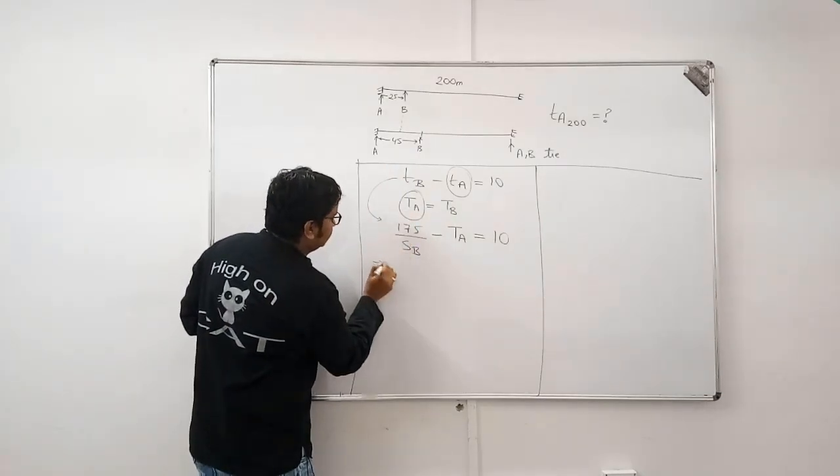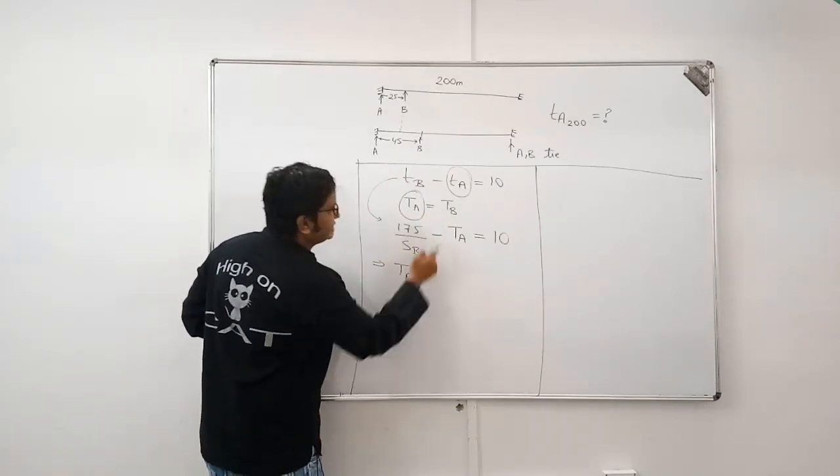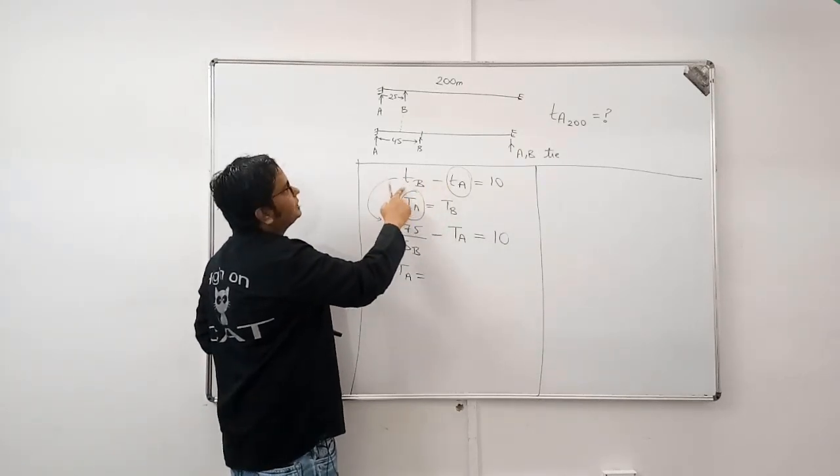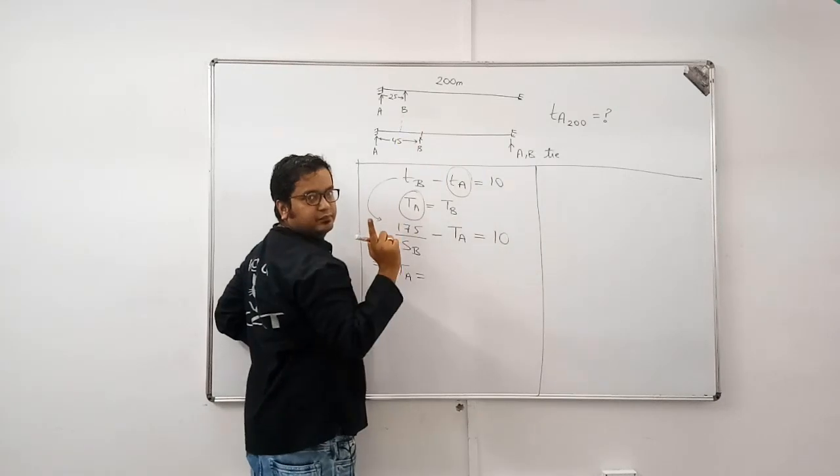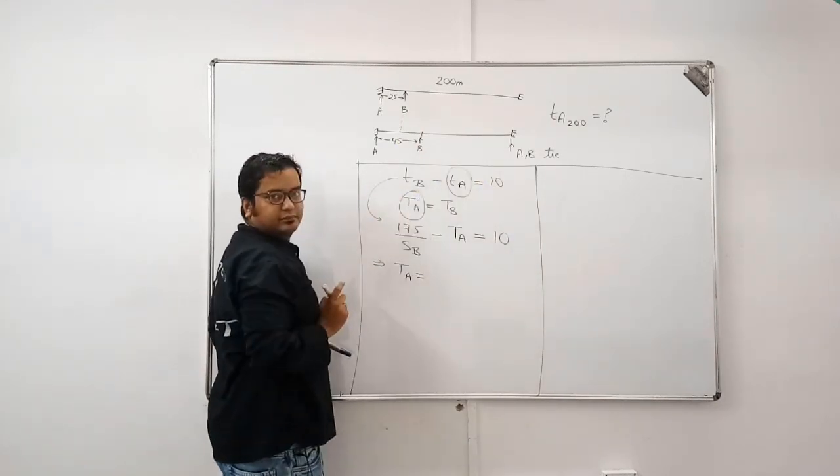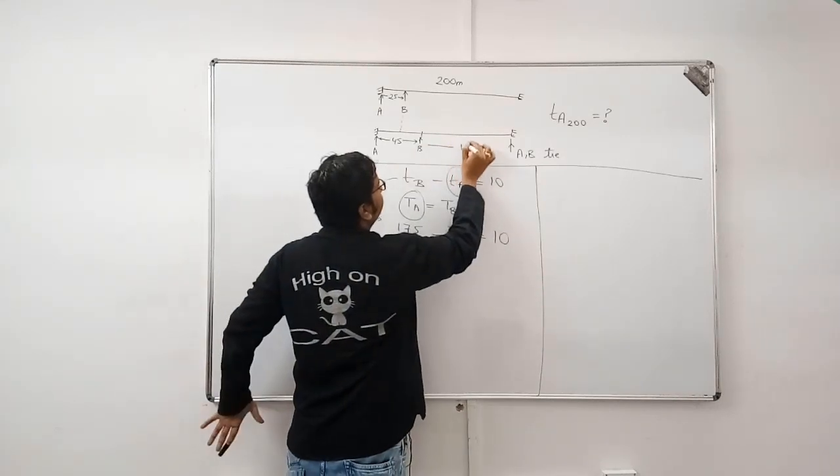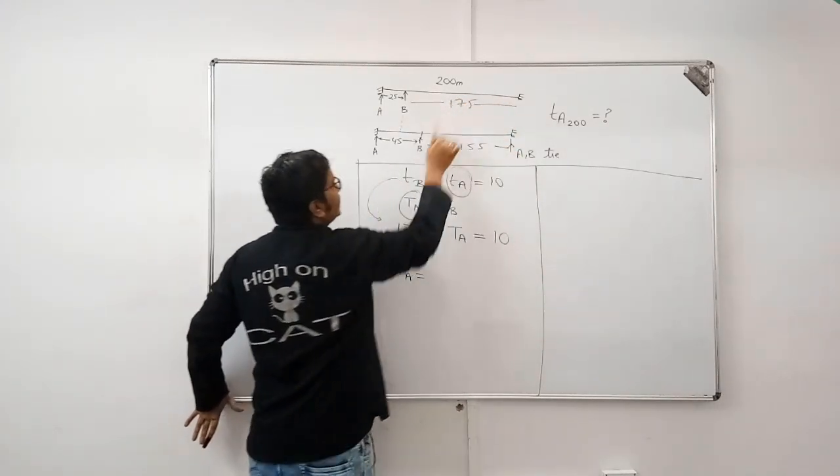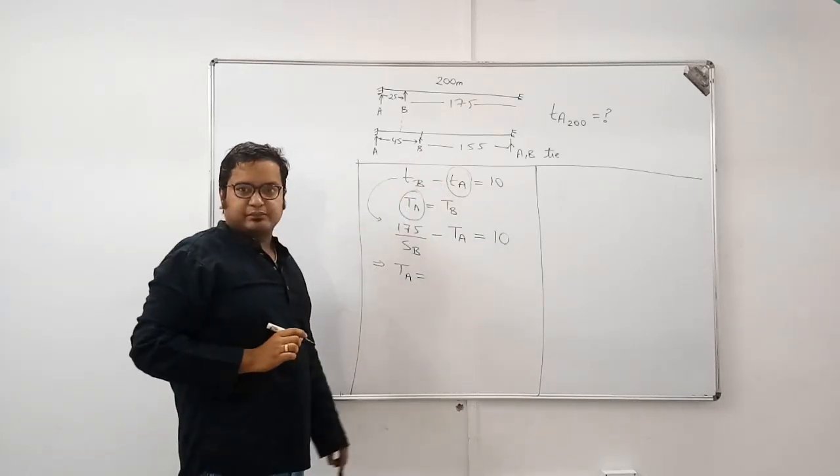From here, time taken by A is equal to, now this TB is different from this TB. This is time taken by B to cover 175 meters. And this one is time taken by B to cover 155 meters. This distance is 155. This distance is 175. So, B's time will be different in both cases.